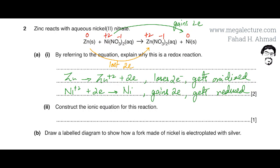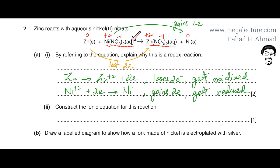The rule for constructing an ionic equation is that whenever a compound is in aqueous state, the ions dissociate. Nickel ions and nitrate ions will separate and mix in water.